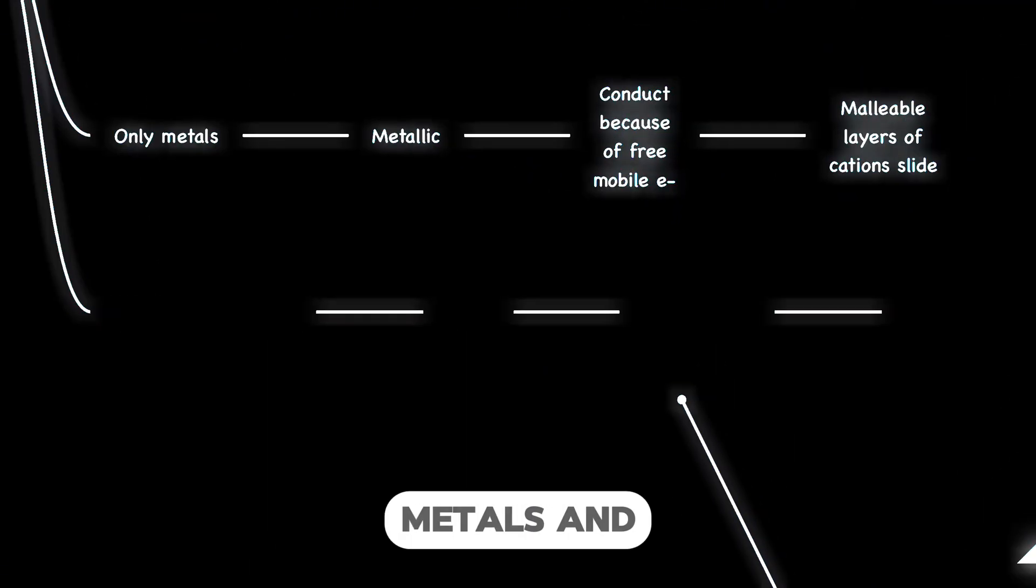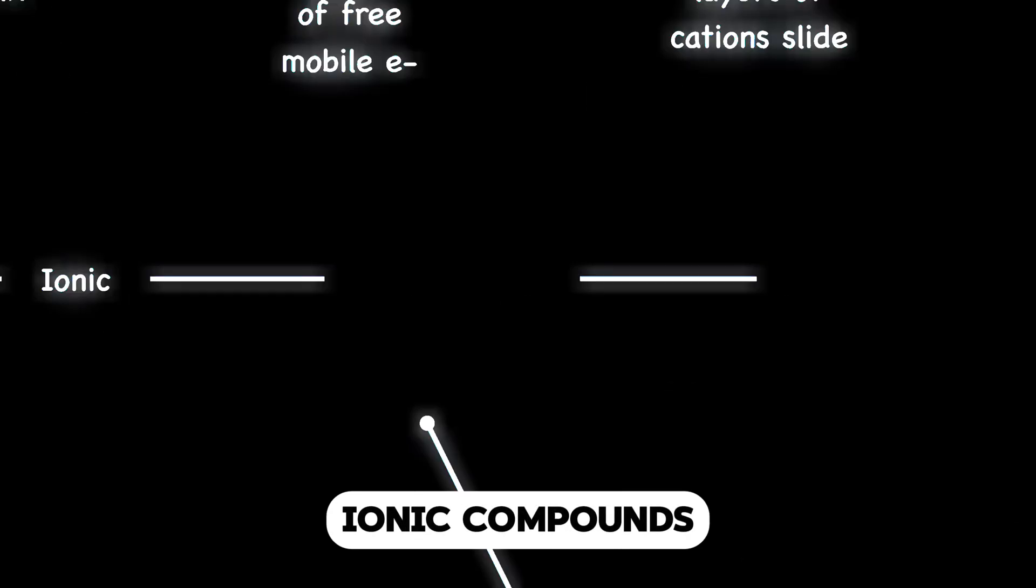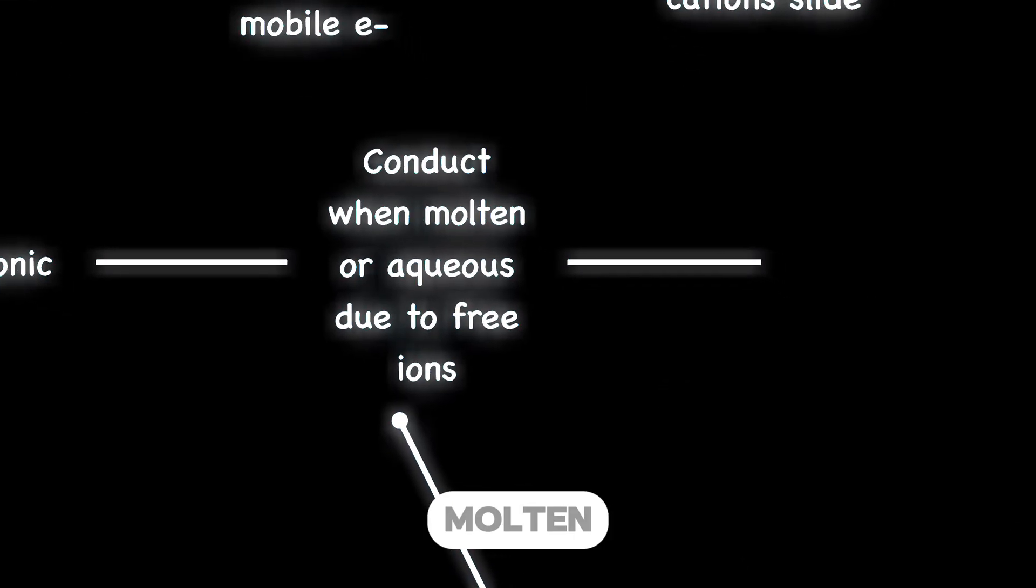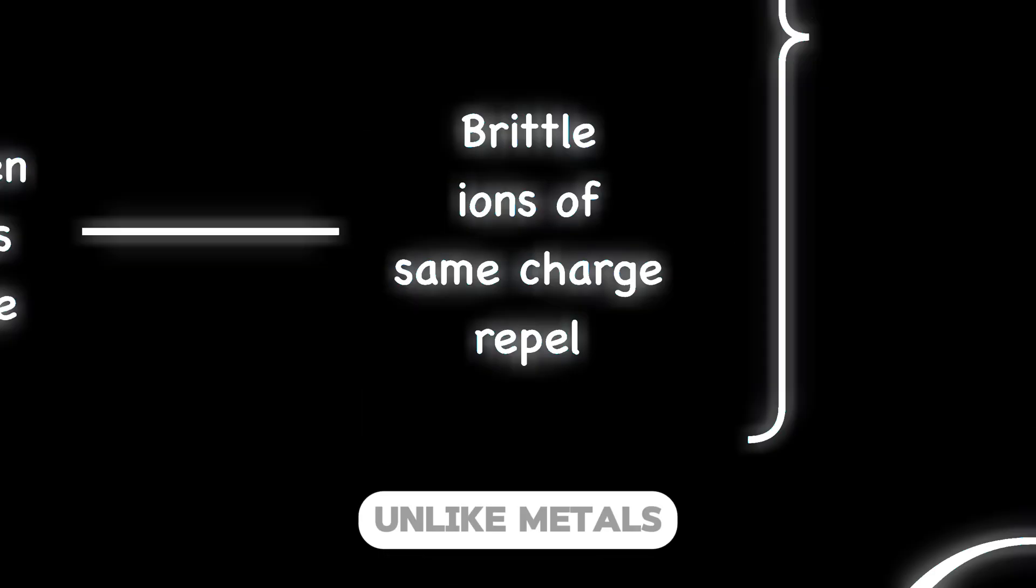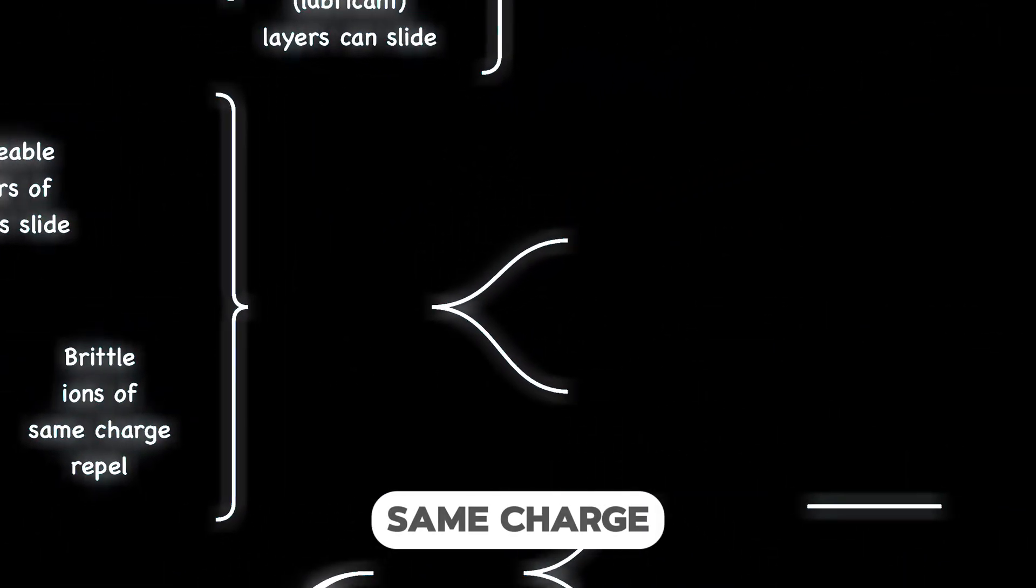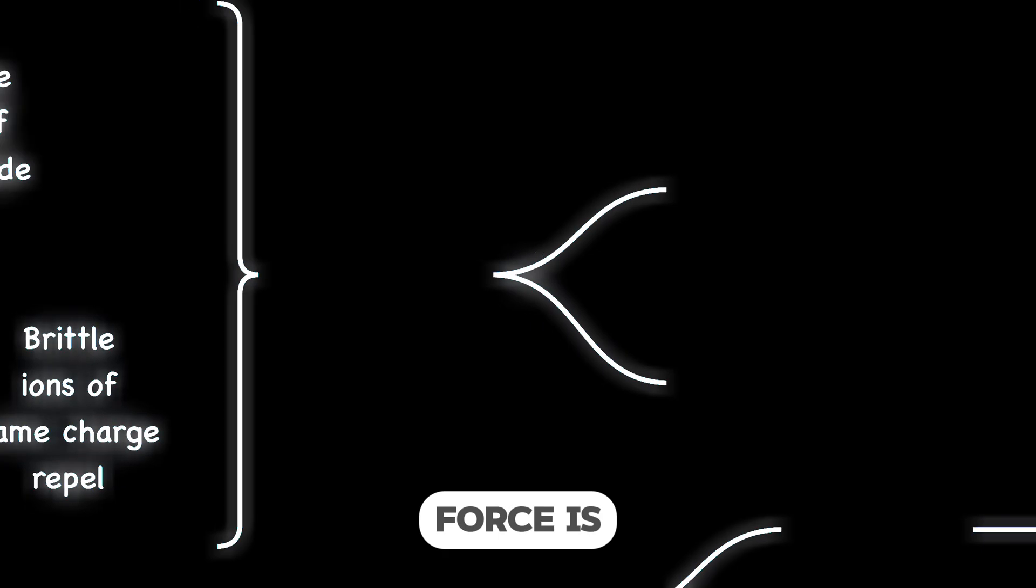Ionic bonds occur between metals and nonmetals. Ionic compounds only conduct electricity when molten or dissolved in water. Unlike metals, ionic compounds are brittle because ions of the same charge would repel when a force is applied.